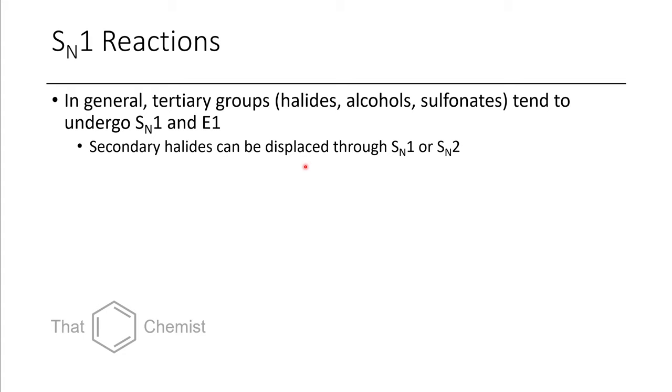However, if you protonate an alcohol and make it a better leaving group, it might be displaced through an SN1 type process. So let's imagine first a secondary halide being displaced through SN1.